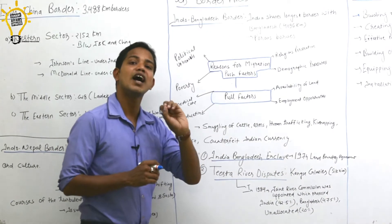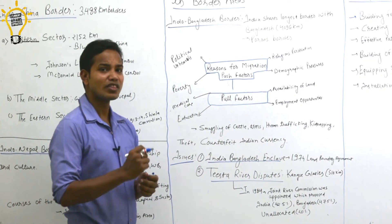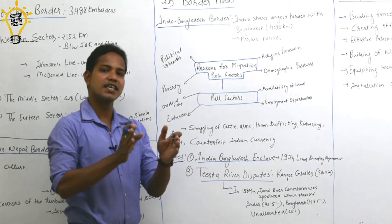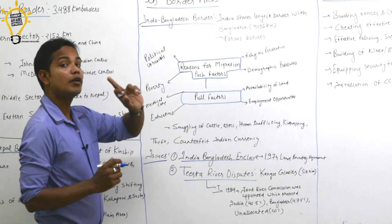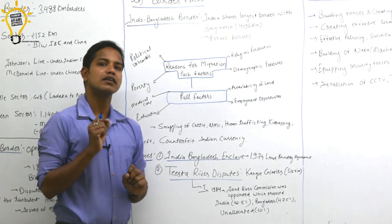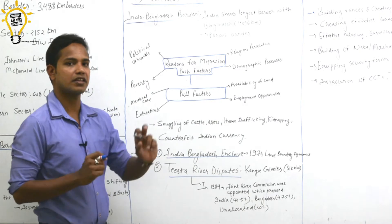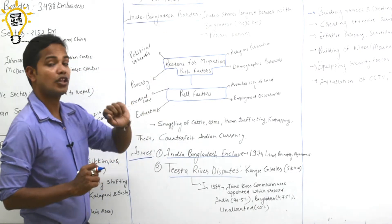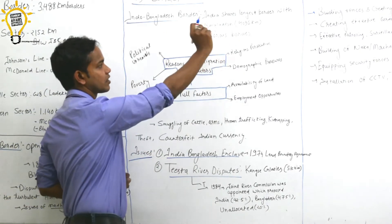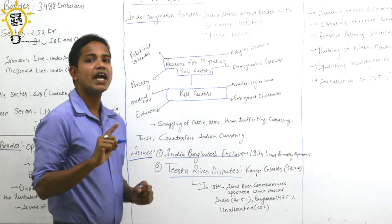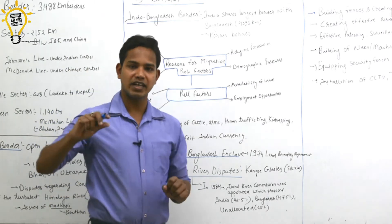Now, after Nepal we move to another important part which is India-Bangladesh border. India-Bangladesh border, when the country became independent, a frequently asked prelims question is that India shares its longest border with which country, which is Bangladesh. 4,096 km, remember. We have porous border.